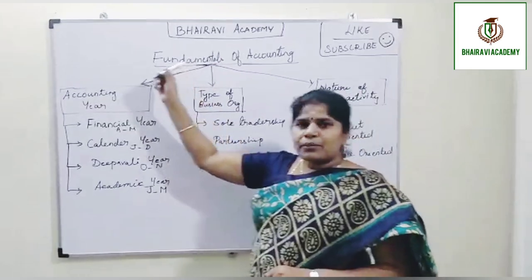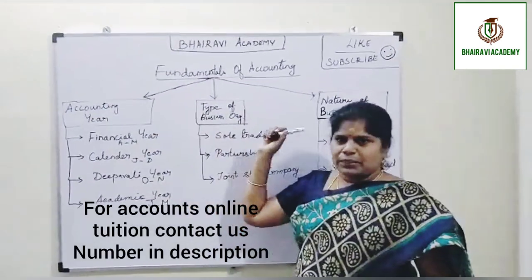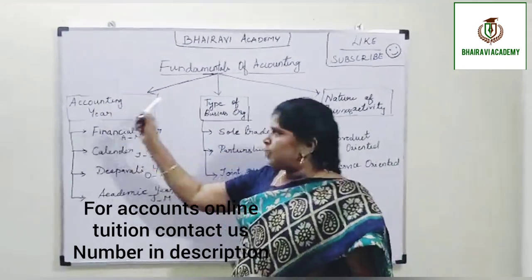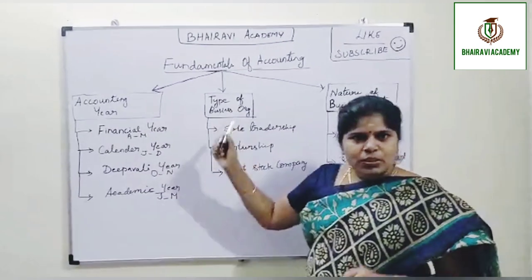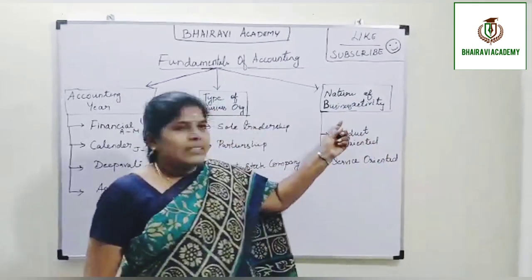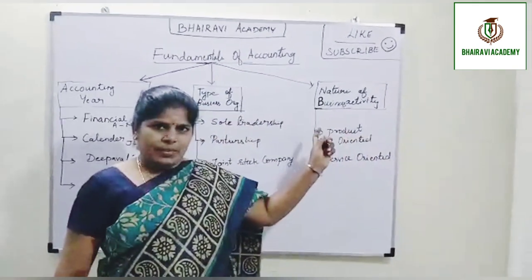This is subdivided into three important aspects. Number one is accounting year, number two is type of business organisation, and number three is about nature of business activity.